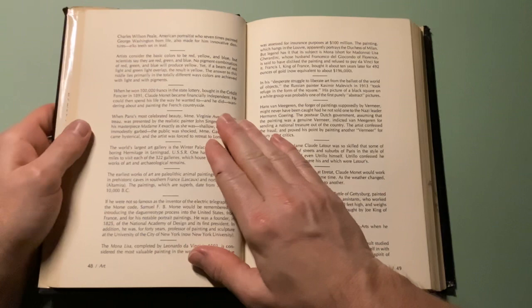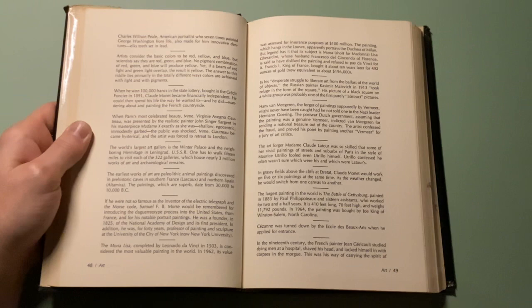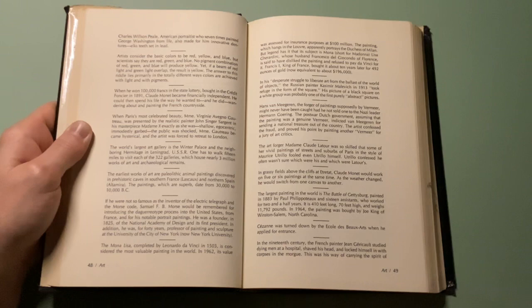When he won 100,000 francs in the state lottery in 1891, Claude Monet became financially independent. He could then spend his life the way he wanted, and he did, wandering about and painting the French countryside.